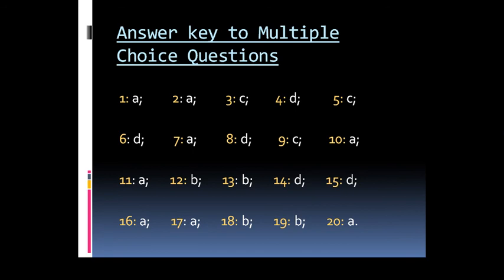Here is the answer key to multiple choice questions. The answers are as follows: Answer to question number 1 is option A. Question 2 is option A. Question 3 is option C. Question 4, right answer is D. Question 5, right answer is option C.